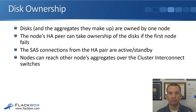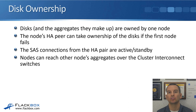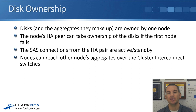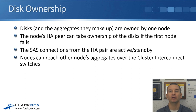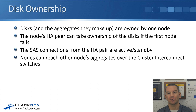Let's say we've got an HA pair with controller 1 and controller 2. Controller 1 owns its disks and controller 2 owns its disks. If controller 1 fails, then controller 2 will detect that and take over ownership of controller 1's disks until controller 1 comes back up. The SAS connections from the HA pair are active standby, so you do not get load balancing on those SAS connections going down to the disk shelves.